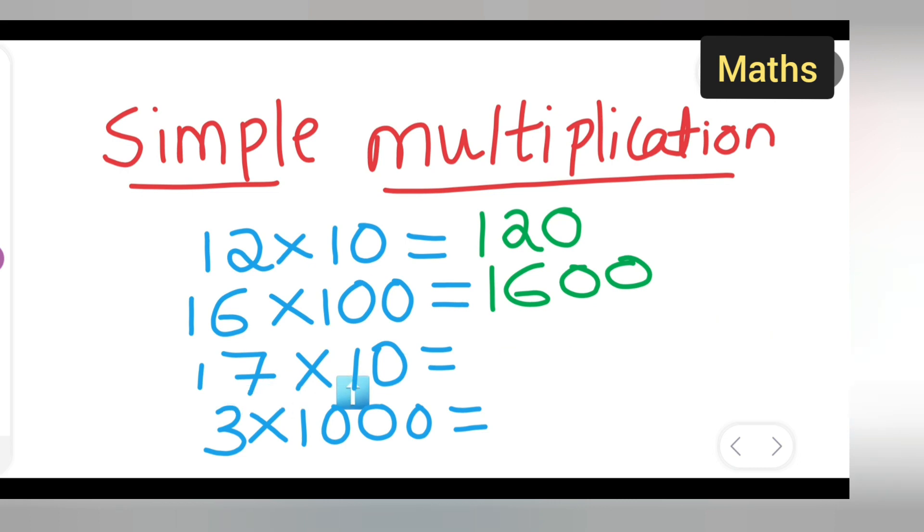Next will be 17 multiplied by 10, so one 0 you will add. What answer you will get: 1, 7, 0.